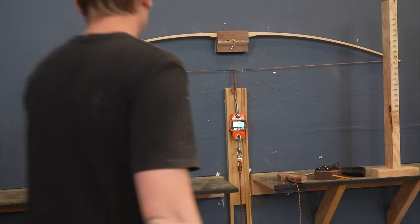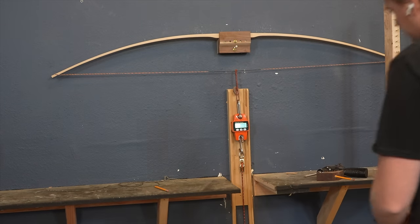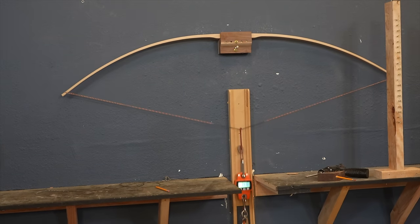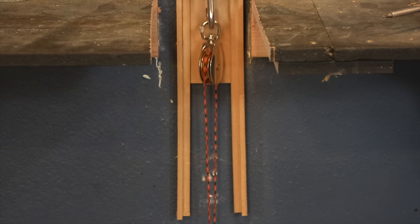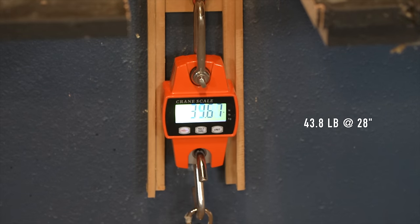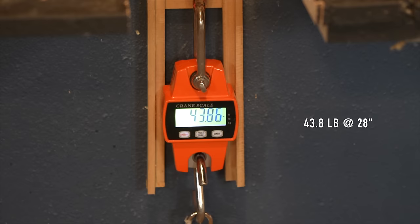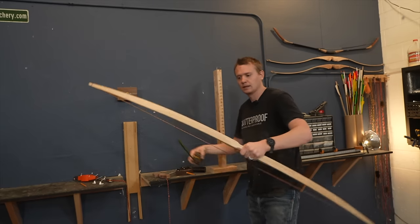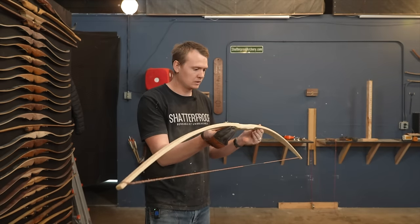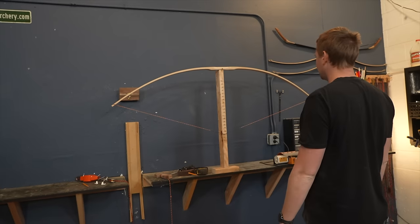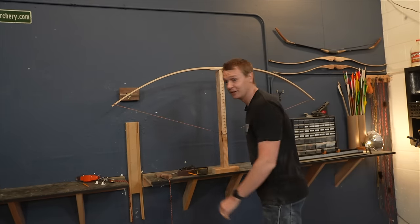All right, let's check the poundage up here on the tillering tree real quick. See where we're at. 26 inches is 38, 43.8. So I believe I'm done. Maybe I'll do a little bit more tillering. Let's see how we're looking. Not too bad. I think I'm going to go ahead and shoot it.